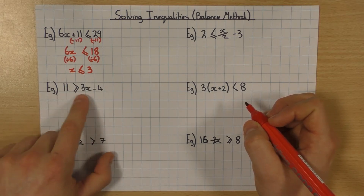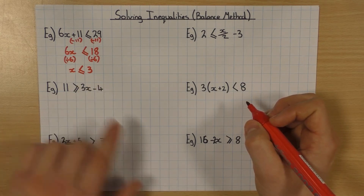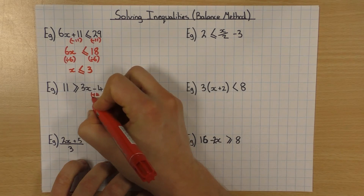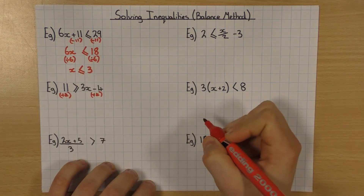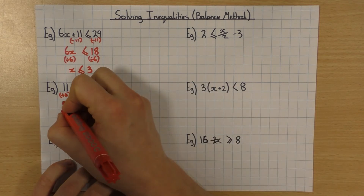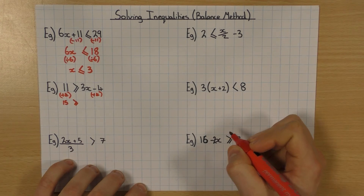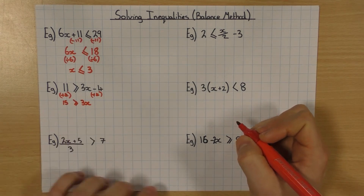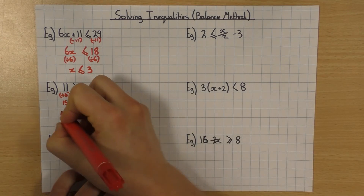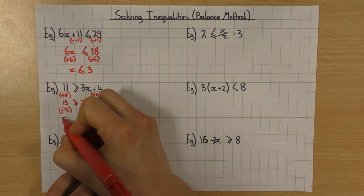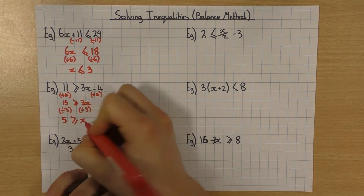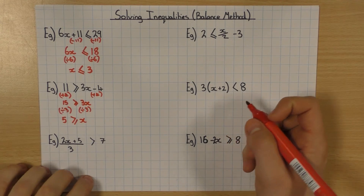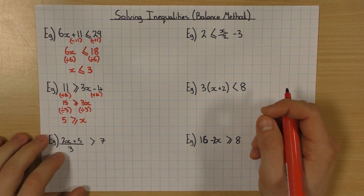Exactly the same thing over here. Even though the 3x is over on this side, it doesn't matter — we still do exactly the same thing. So I want to get rid of the number first; in this case it's minus 4. So I'm going to do the opposite and plus 4 to both sides, showing my working underneath each side. Obviously 11 plus 4 gives me 15, then the inequality symbol stays exactly the same, and I'm left with 3x on the right hand side. Next step: 3x means 3 times x, so I do the opposite and divide by 3. 15 divided by 3 is 5, the inequality sign stays the same, and x is on the right. Key thing — if x is on this side it stays on this side. There is one exception to that which I'll come on to later, but for now just keep working your way down using the balance method and you'll get the answer right.